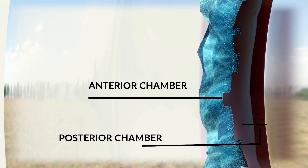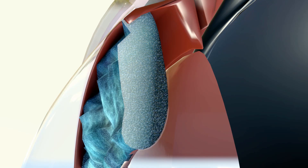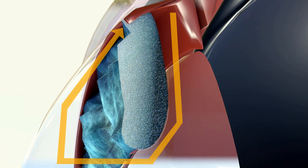Moving anteriorly, there are two chambers separated by the iris: the anterior and posterior chambers. The anterior chamber is bound by the posterior surface of the cornea and the anterior surface of the iris. The posterior chamber is bound by the posterior surface of the iris and the anterior surface of the lens. Aqueous humor is the transparent fluid that fills these two chambers, produced by the ciliary processes into the posterior chamber, which then moves into the anterior chamber through the pupil and eventually drains through the trabecular meshwork into the venous circulation of the eye.